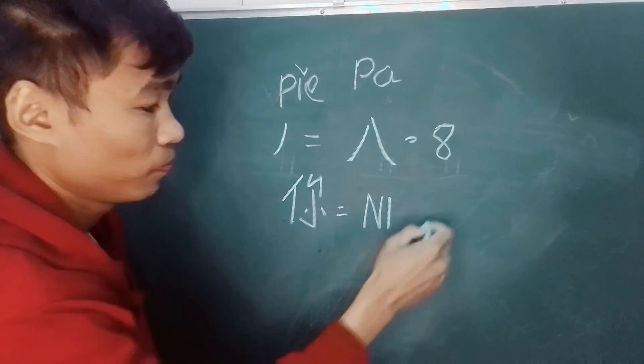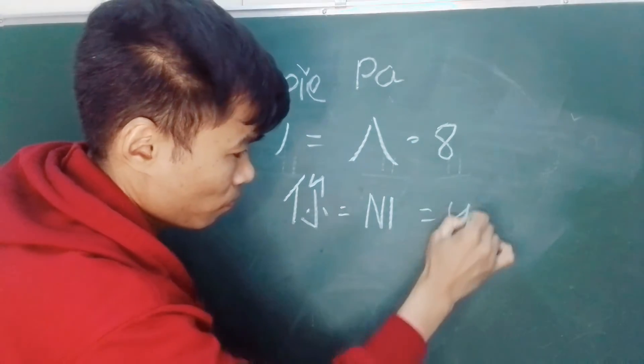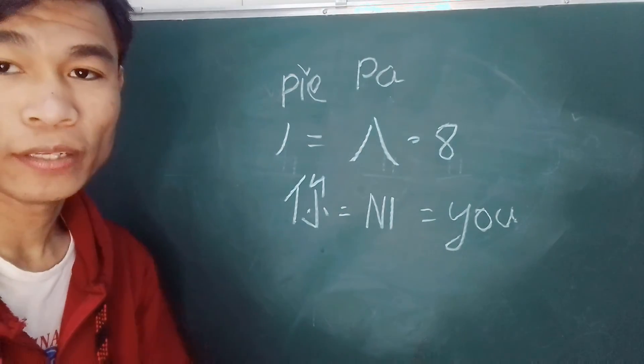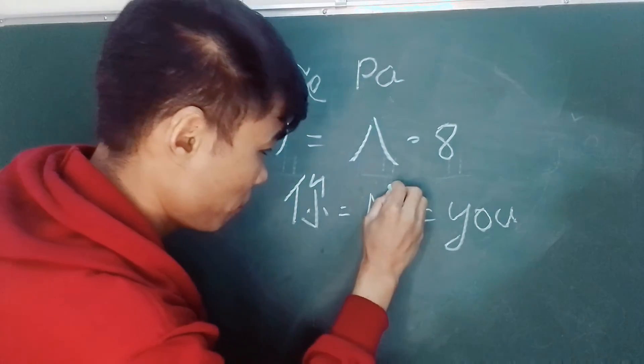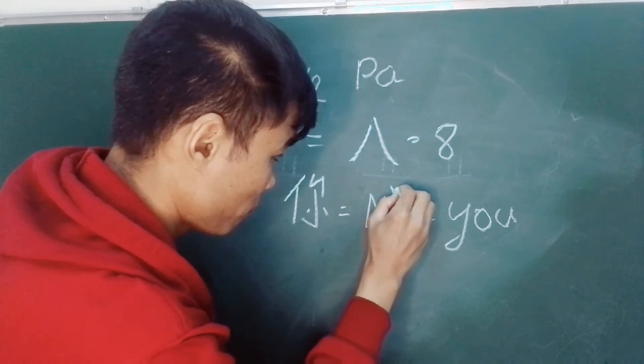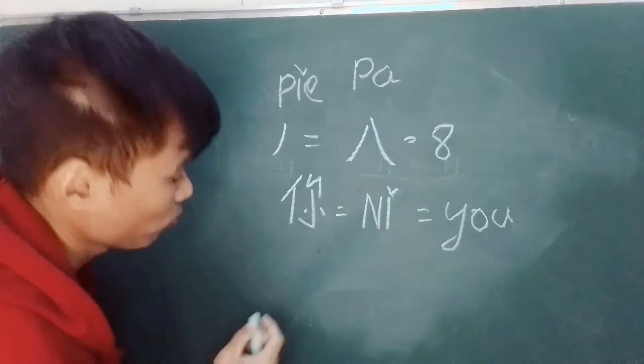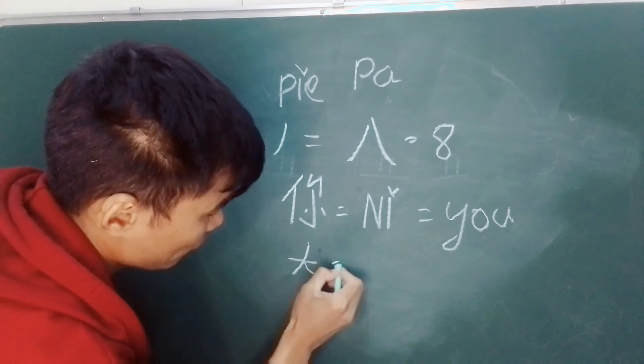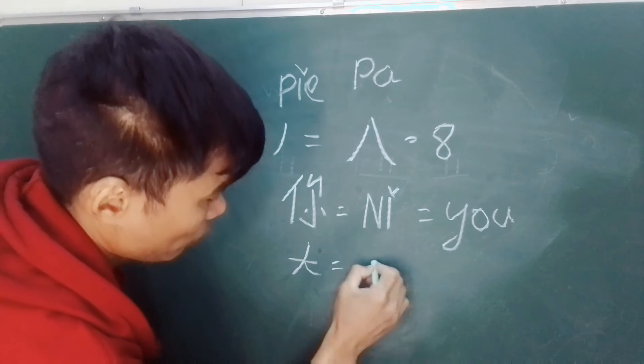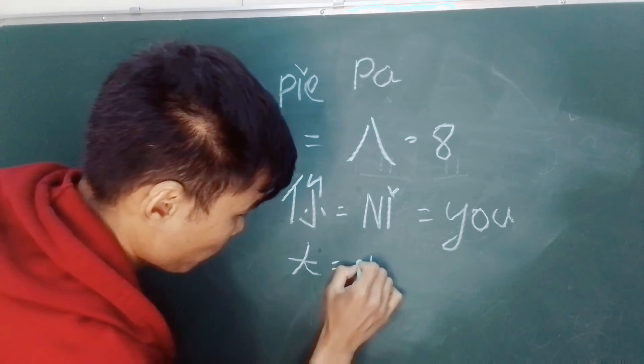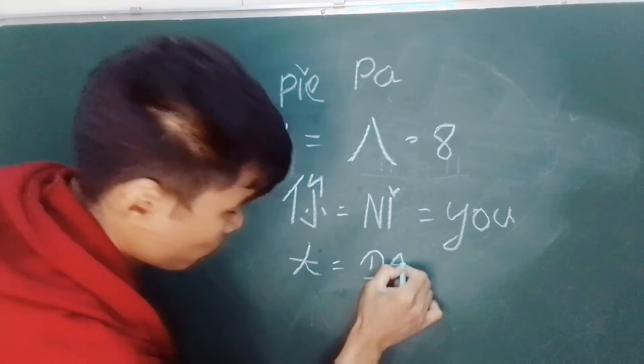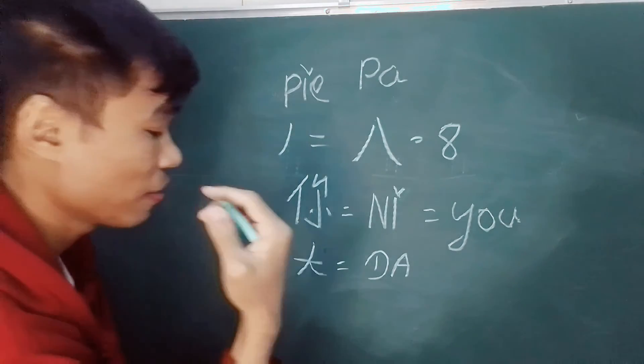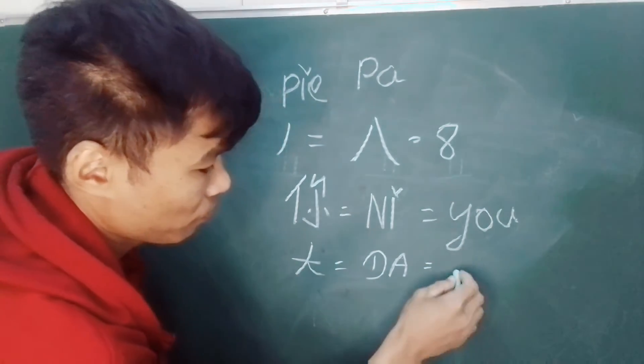Second, ni, it means you. This one is ni, it means you. And this one is ni. This one is da, it means big.